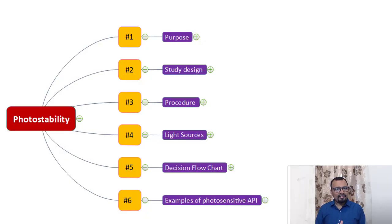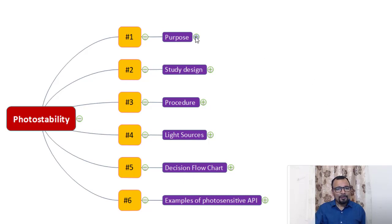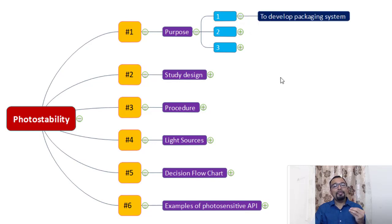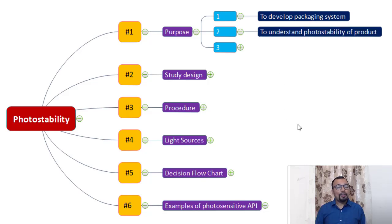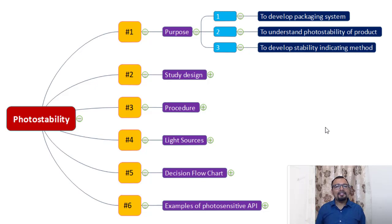Let us begin with the presentation. There are six important points to discuss today. The first is purpose: to develop a suitable packaging system — what packaging materials are needed to protect the product from light. The second is to understand photostability, including whether sunlight or UV radiations impact product stability. The third is to develop a suitable stability-indicating analytical method.